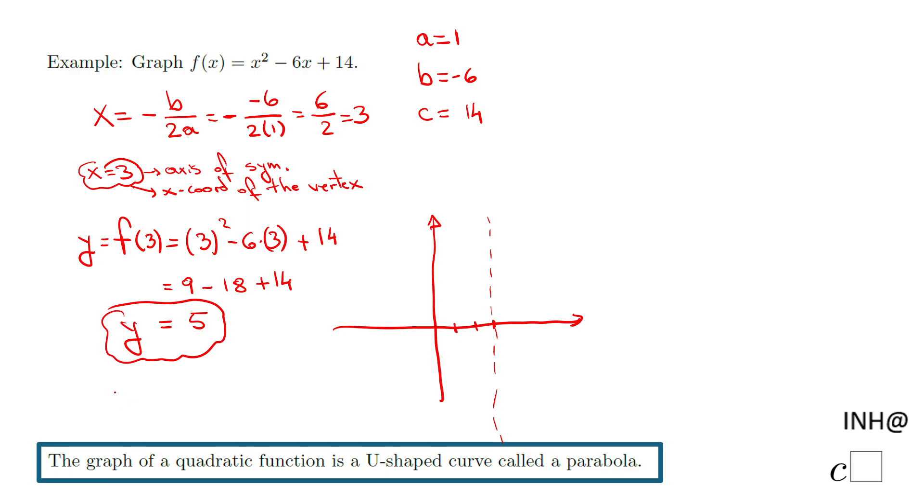The y-coordinate of the vertex is positive 5. Exactly like that. I'm going to call it V, which stands for the vertex. It is at 3 and 5. So on this axis of symmetry, I'm going to count 5: 1, 2, 3, 4, 5. This is the vertex.